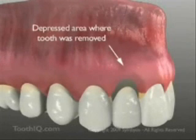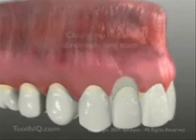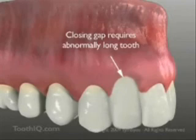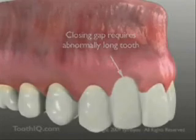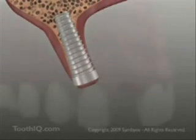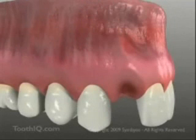Here, a fixed bridge with a normal-sized replacement tooth, or pontic, would leave a sizable gap between the tooth and gums. Closing the gap with a bridge would require an abnormally long pontic. Restoring an area of untreated bone resorption in the front part of the mouth with a dental implant may not be possible without bone grafting first.